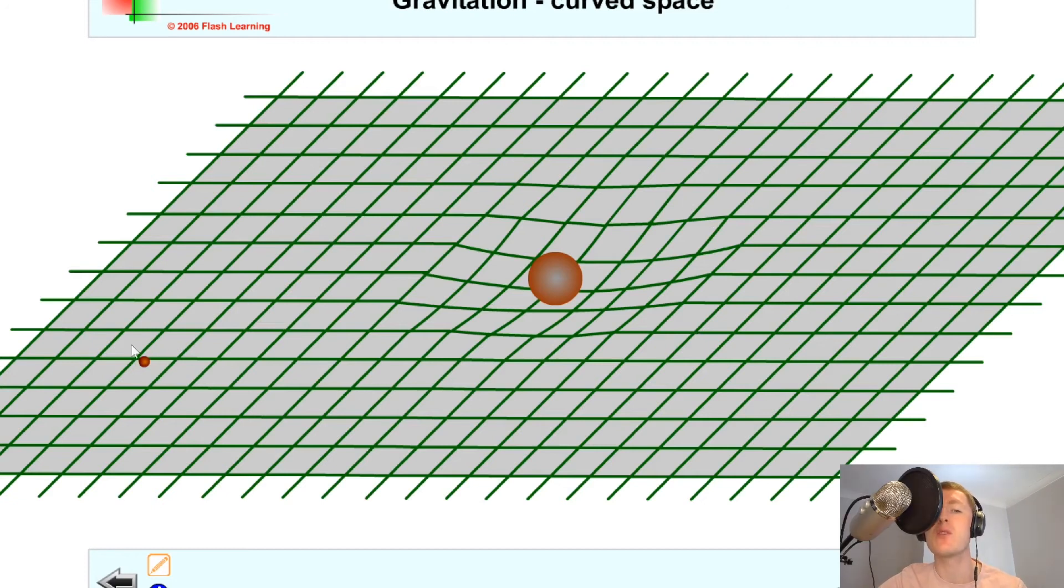So imagine we've got a large mass here in the centre causing a warping of space-time around it. And we've got our small mass over here which is going to be moving in towards it. So we can show the small mass moving at slow, medium or fast pace. So if we click play here for slow first of all, this is what it looks like.